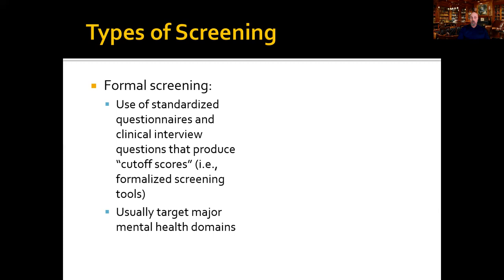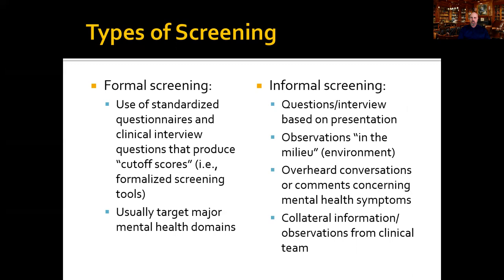Every treatment agency in San Diego County has questions on their intakes about mental health — often simple questions like 'Have you ever been diagnosed with a mental health disorder?' and questions about the major mental health domains: depression, anxiety, trauma, psychotic symptoms, and so on. Formal screenings are fairly easy for the alcohol and drug counselor to do — you follow the standardized questionnaire and ask the requisite follow-up questions. However, most screening for co-occurring disorders will happen informally.